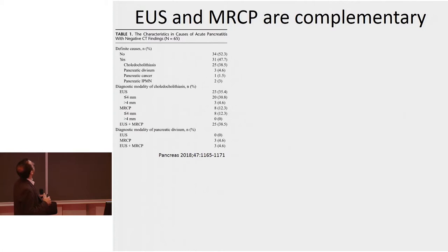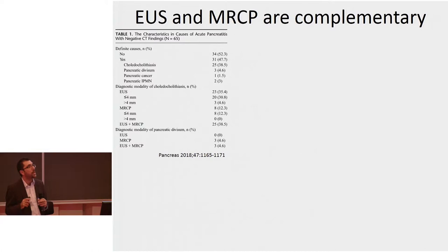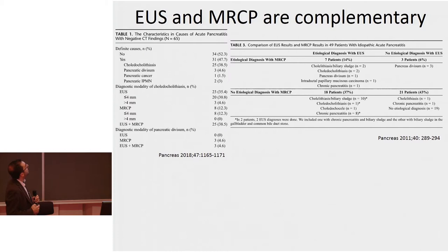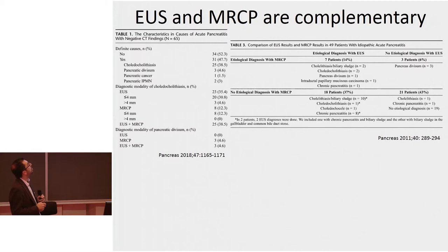EUS missed CBD stones in three patients in that study, and MRCP identified all patients with pancreas divisum, which was not the case with EUS. So EUS and MRCP are complementary. EUS is better to identify gallstone disease, as confirmed by another earlier study. Again in patients with acute pancreatitis of idiopathic cause, EUS identified a specific cause in up to half the patients. The only patients where a cause was diagnosed only by MRCP were three with pancreas divisum. So do both if you can.